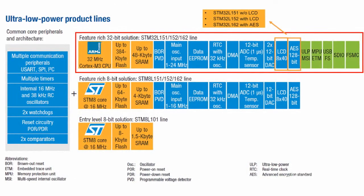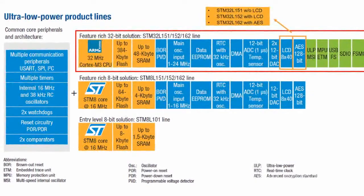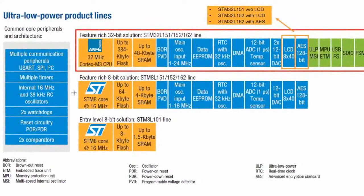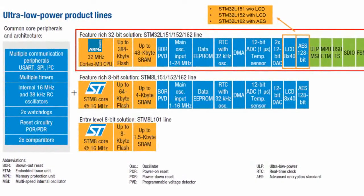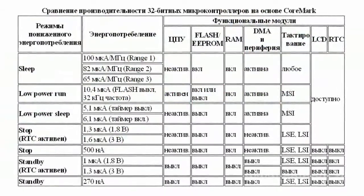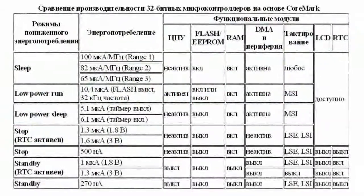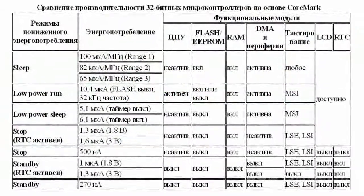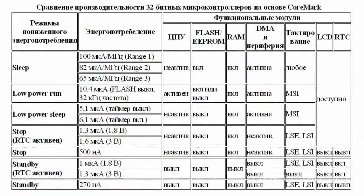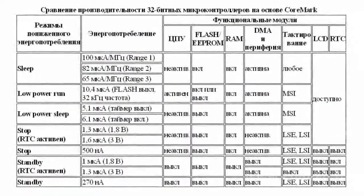In general, the STM32L line has seven modes of reduced energy consumption. In Sleep mode, the central processing unit is stopped but all peripherals keep working and can cause processor core awakening with a break or event.